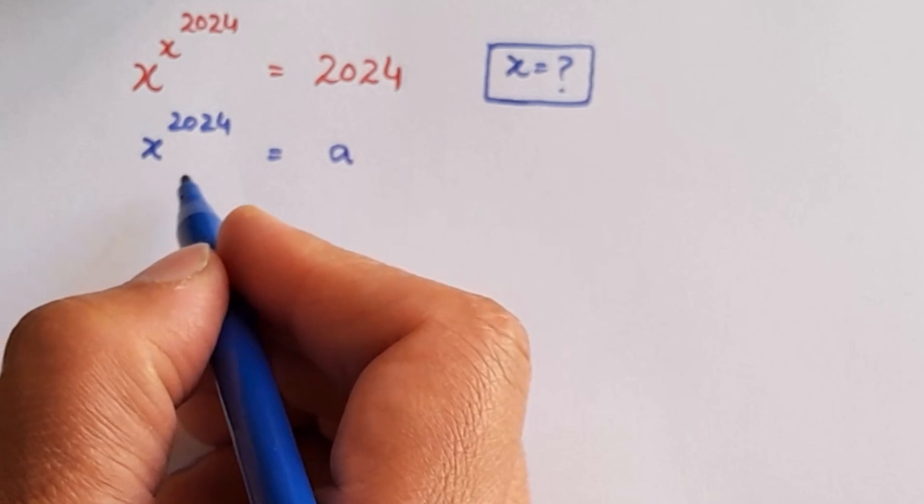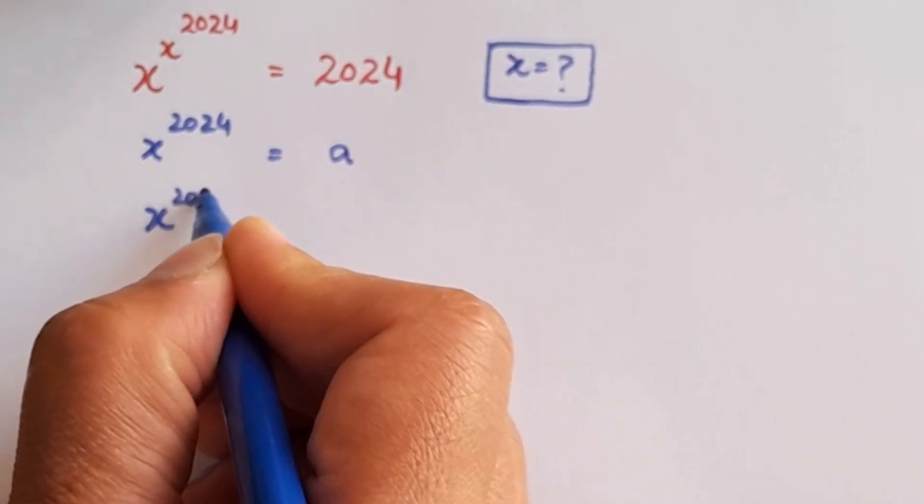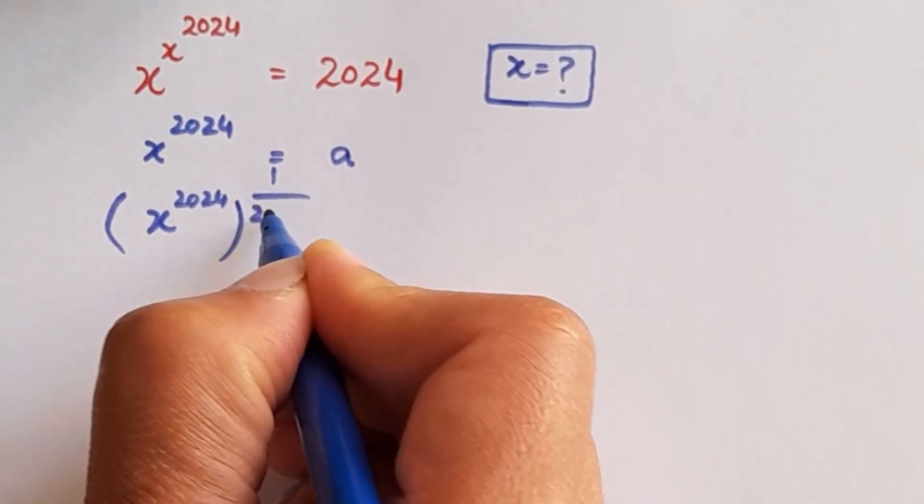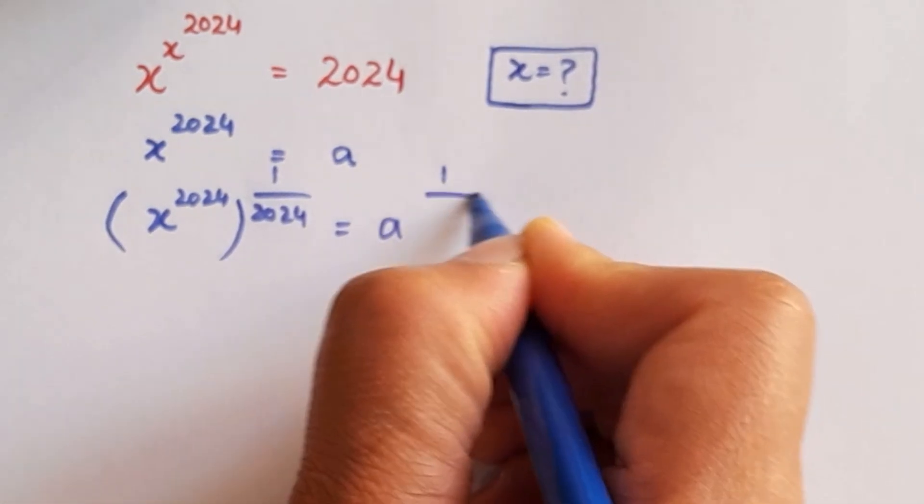We will take power 1 over 2024 on both sides of this equation. On the right hand side as well, a to the power 1 over 2024.